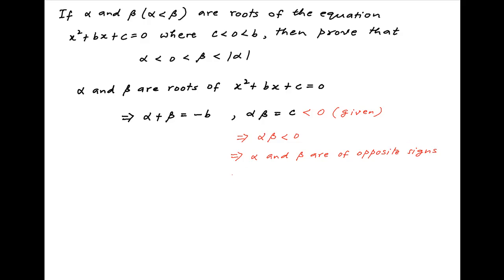Now, we are given that alpha is less than beta. Therefore, alpha, which is the smaller of the two numbers, must be negative, and beta must be positive. Let's call this Result 1.